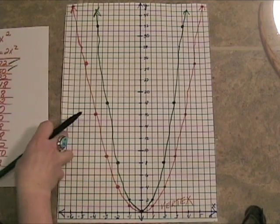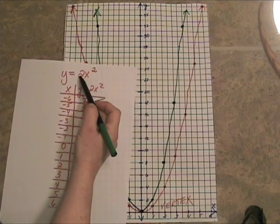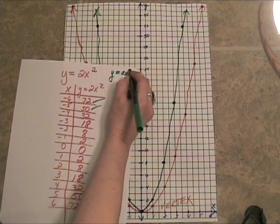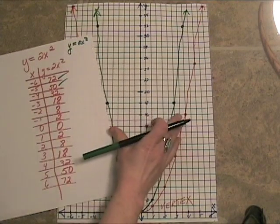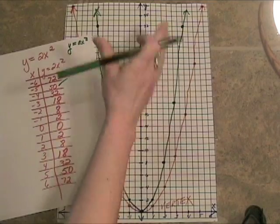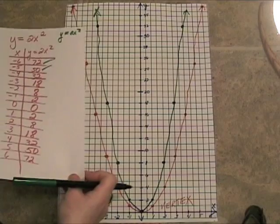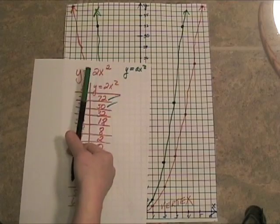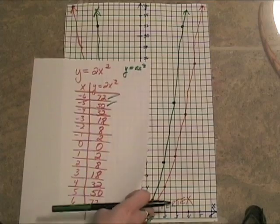So it got skinnier when I made the a larger. Remember the general form is y equals ax squared. As the a gets larger, the parabola gets skinnier because those y values shoot up. They get taller much faster. Let's see what would be happening then if we made the a value smaller.